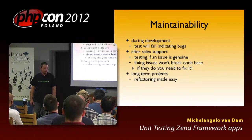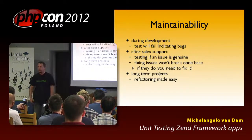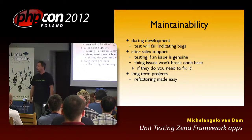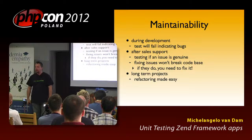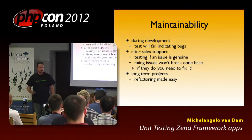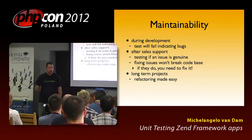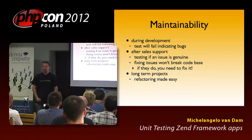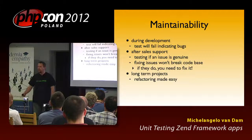It's all about maintainability. During development, your tests will fail and they will indicate you've got a bug here. After sales support — testing if an issue is genuine. How many times have you answered the phone, and in the end it's the user that made the mistake, not you as a developer? So test if an issue is really a bug. And when it really is a bug, you fix it. And you know how to fix it because you have a whole bunch of tests that will prove that what you did won't break the code. And even if it breaks the code, you can fix that too, because it will say that is broken.